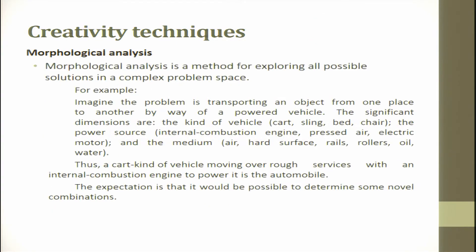In general morphology, the problem of representing more than three dimensions is overcome by placing variables in columns beside each other, with their value ranges listed below — this is called a morphological field. Morphological analysis is a method for exploring all possible solutions in a complex problem space. For example, the problem of transporting an object from one place to another by a powered vehicle has three significant dimensions: the kind of vehicle, the power source, and the medium. A cart-type vehicle moving over a rough surface with an internal combustion engine is the automobile.